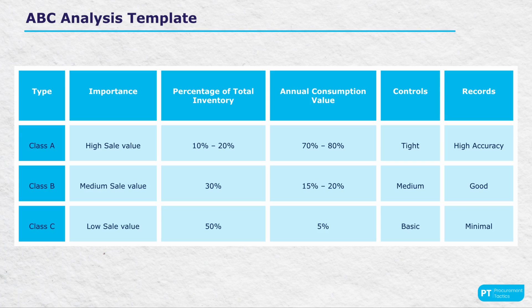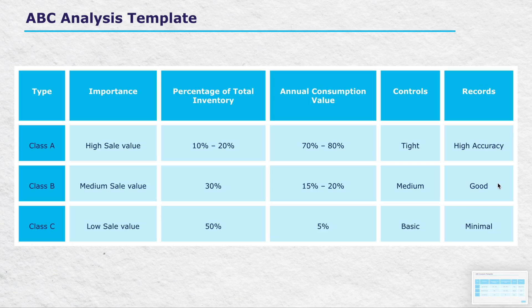Now for the rows. Class A, the VIP group, makes up 10 to 20% of the inventory but contributes 70 to 80% of the consumption value. These items are closely monitored and accurately recorded. Class B forms about 30% of the inventory and accounts for 15 to 20% of the consumption value; control and record accuracy here are balanced between strict and relaxed. Class C is the largest group by number at 50% of the inventory, but only contributes about 5% to consumption. Controls and records are minimal, focusing on volume rather than value.